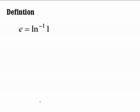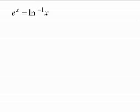We start off by defining Euler's constant. e is the inverse natural log of 1. We generalize this and say that e to the x is the inverse natural log of x.